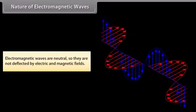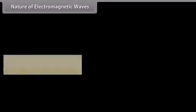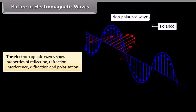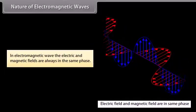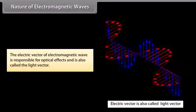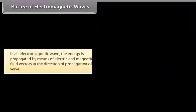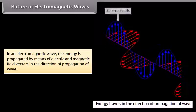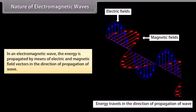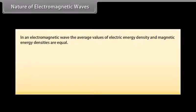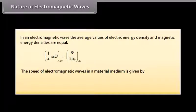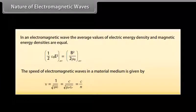Nature of electromagnetic waves. Electromagnetic waves are neutral, so they are not deflected by electric and magnetic fields. The electromagnetic waves show properties of reflection, refraction, interference, diffraction and polarization. In electromagnetic wave, the electric and magnetic fields are always in the same phase. The electric vector of electromagnetic wave is responsible for optical effect and is also called the light vector. In an electromagnetic wave, the energy is propagated by means of electric and magnetic field vectors in the direction of propagation of wave. In an electromagnetic wave, the average values of electric energy density and magnetic energy densities are equal. The speed of electromagnetic waves in a material medium is given by the relation nu is equal to C upon N.